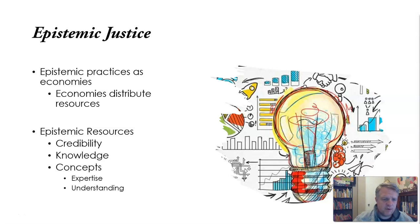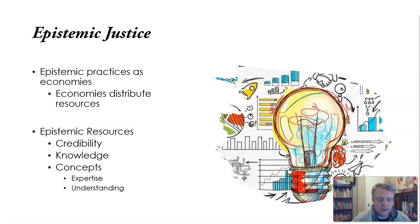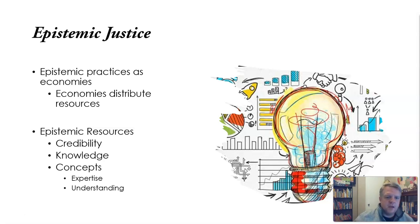So this is what we want to think about: epistemic practices as social practices on analogy with an economy, where particular resources — credibility, knowledge, concepts — are distributed among the practitioners. When things are going well, when it is a just epistemic practice, these resources are distributed in a just way. That doesn't mean that everyone is treated the same or that everyone has access to exactly the same epistemic resources.